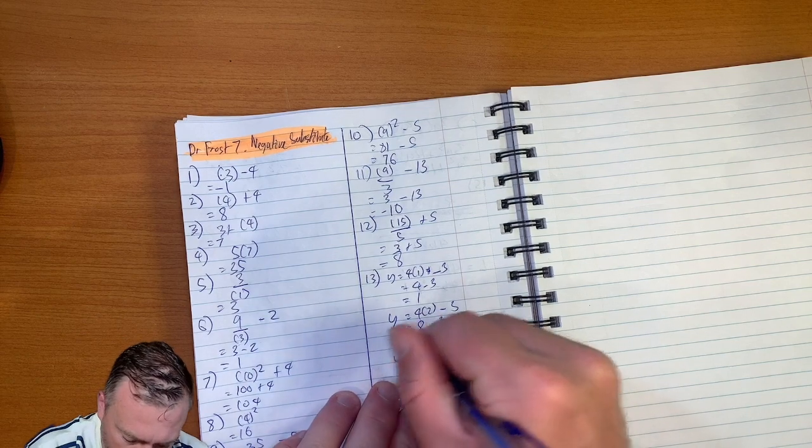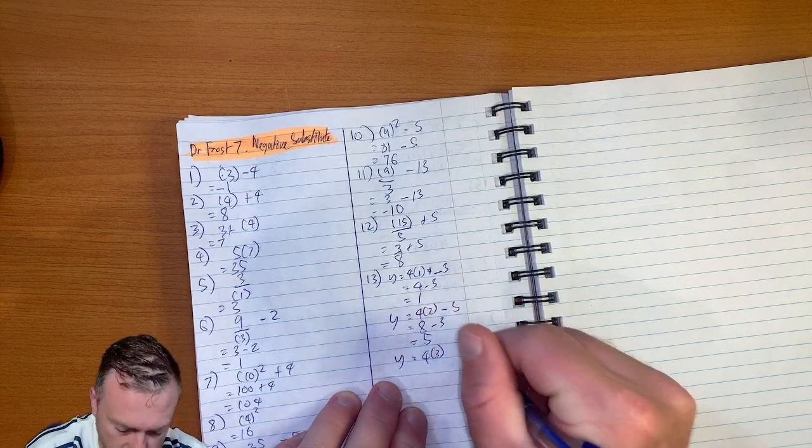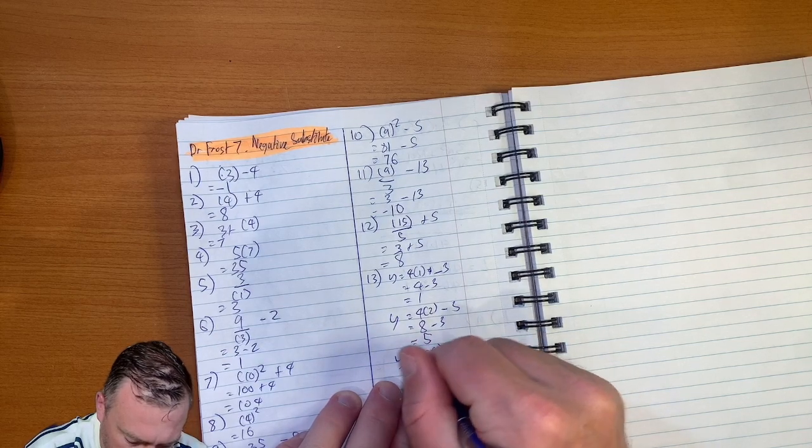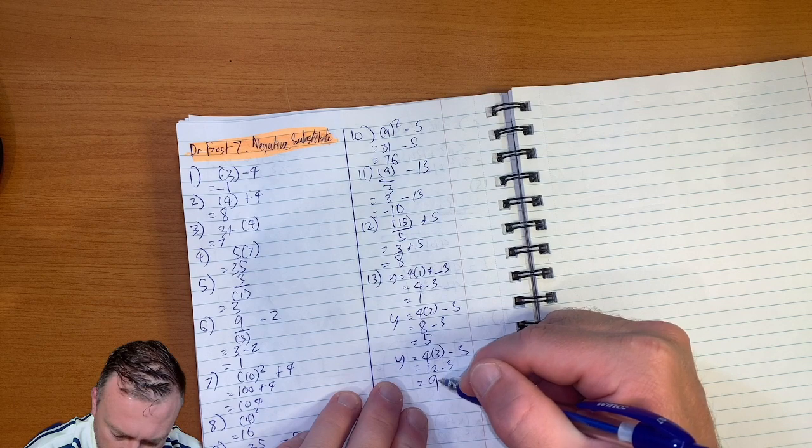Then y equals four lots of three, minus three, which equals twelve take away three, which equals nine. So you can see that this is just going up by four each time.